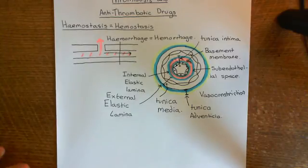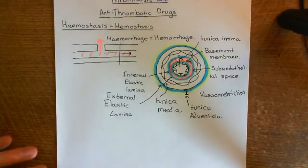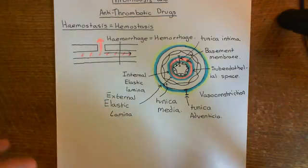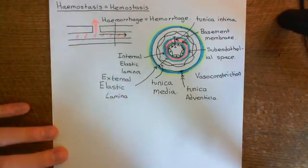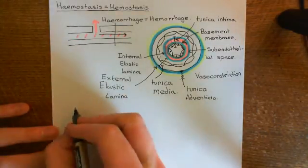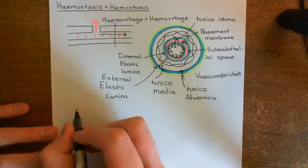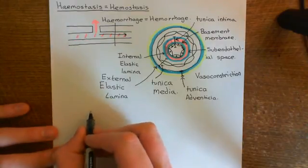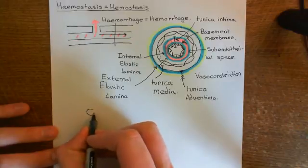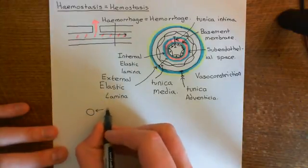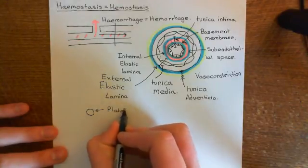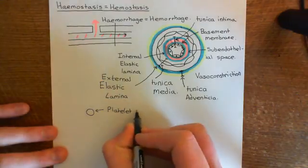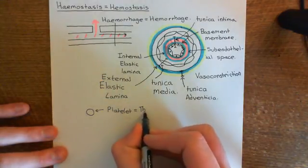We've just revised the layers of the blood vessel, and now what we're going to do is describe platelet adhesion. So let's start with a little description of what a platelet actually is. One of the constituents of the blood is a subcellular structure - it's not really a cell, but its name implies that it's a cell. It's like a little cell but it has no nucleus. Here is a platelet, and its old name, which you'll still hear occasionally, is to call it a thrombocyte.